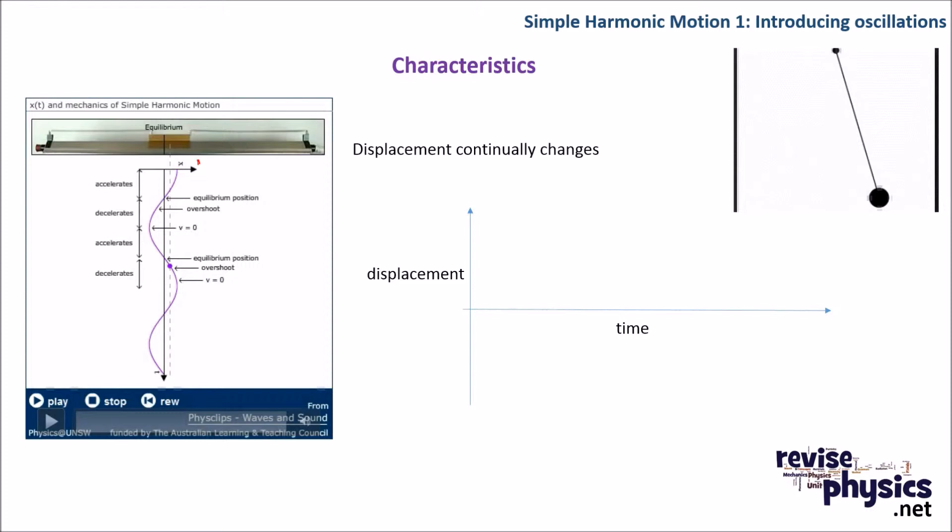And as it plots, it draws out this rather lovely cosine curve. Why is it a cosine curve? Well, we're starting at maximum displacement. So we end up getting our cosine curve with one full cycle being our time period T. And from that, of course, we could work out the frequency from one over T.